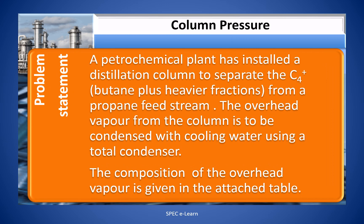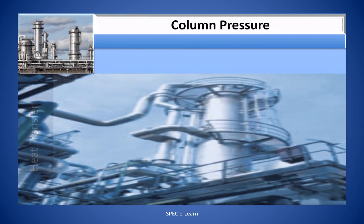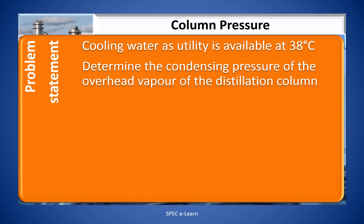Problem statement: A petrochemical plant has installed a distillation column to separate C4-plus (butylene and heavier fractions) from a propane feed stream. The overhead vapor from the column is to be condensed with cooling water using a total condenser. The composition of the overhead vapor is given in the attached table. Cooling water as utility is available at 38 degrees centigrade. Determine the condensing pressure of the overhead vapor of the distillation column.